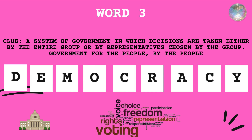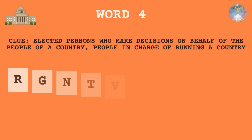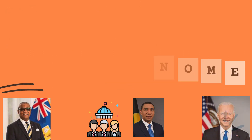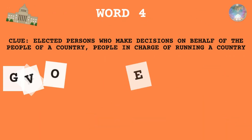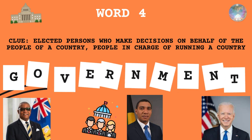Easiest word. These are elected people who make decisions on behalf of the people of the country, or a body of people who are in charge of the affairs of the country. That's right — government.